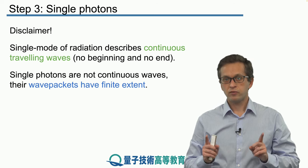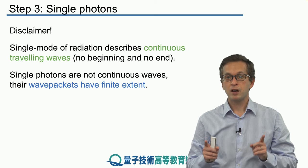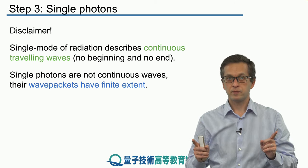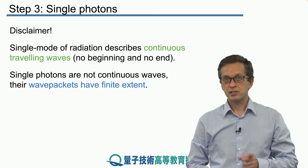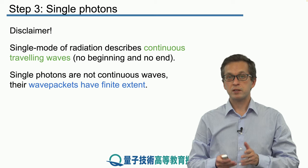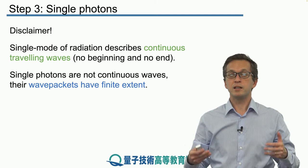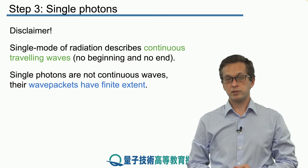So the one photon state is not a continuous wave, it is a wave packet of finite extent. And we know from our lesson on Fourier analysis that such a state cannot be produced with a single frequency. We must have a spread of frequency that we all add together, we all add their amplitudes in order to produce this wave packet.